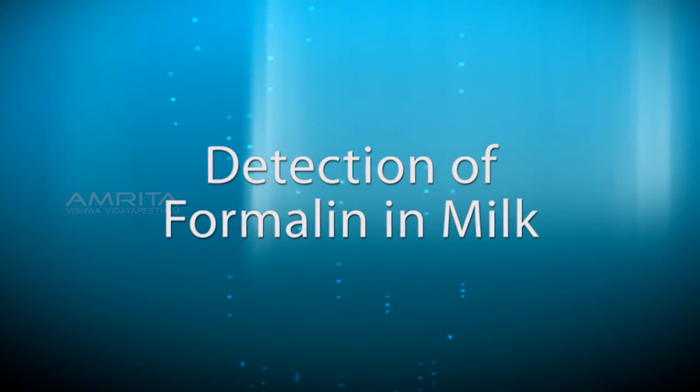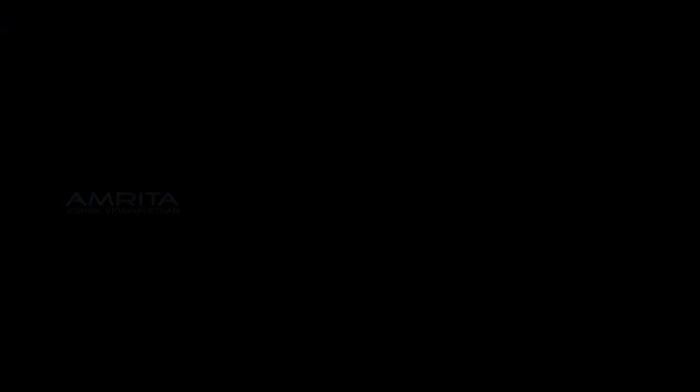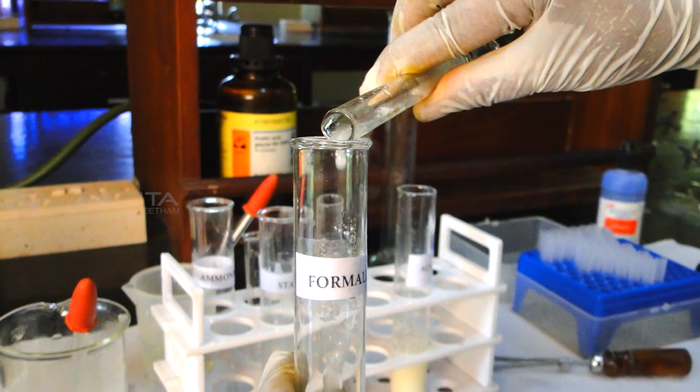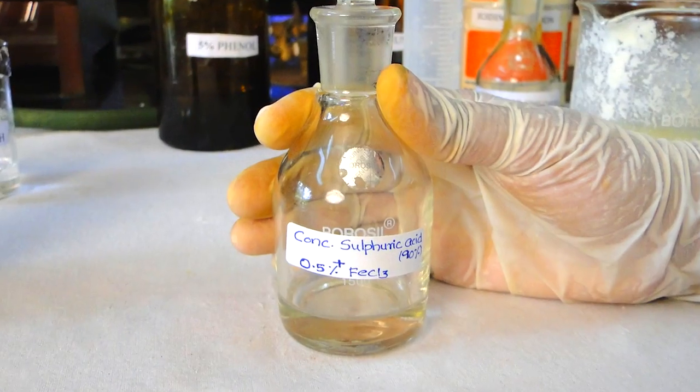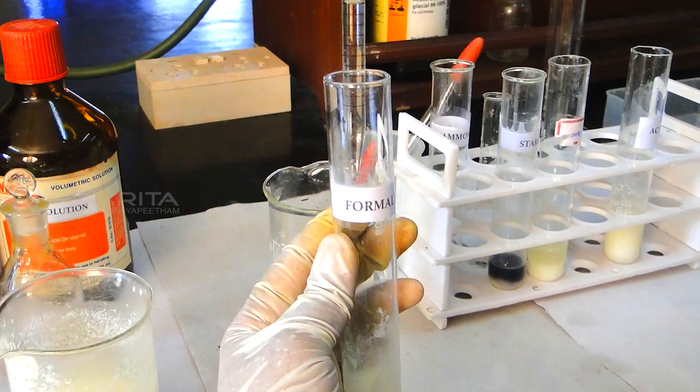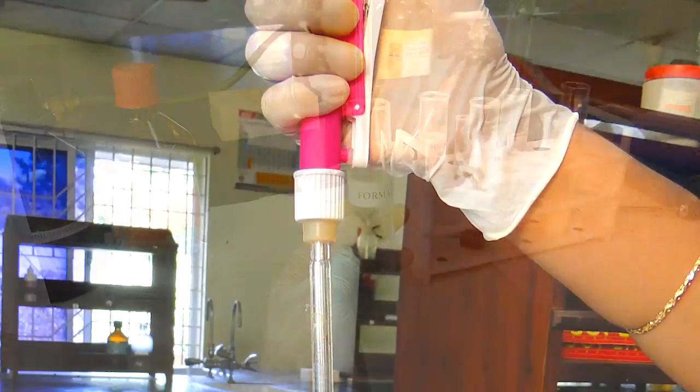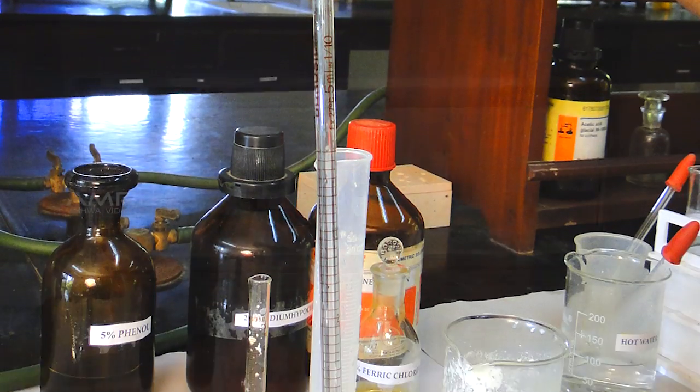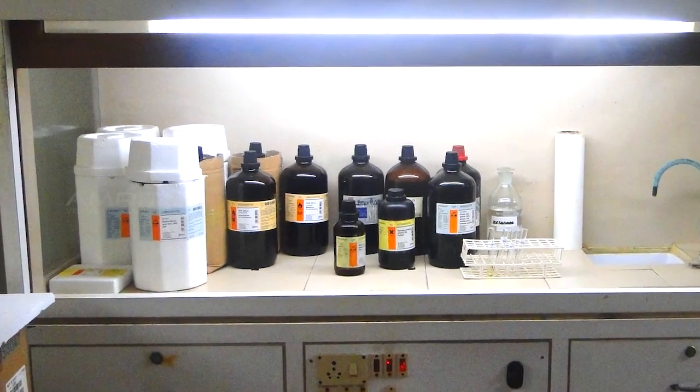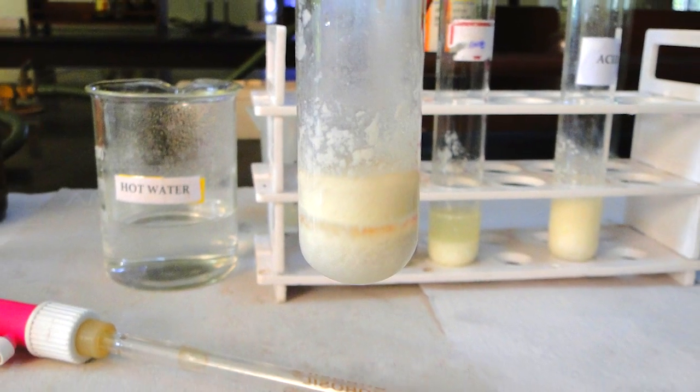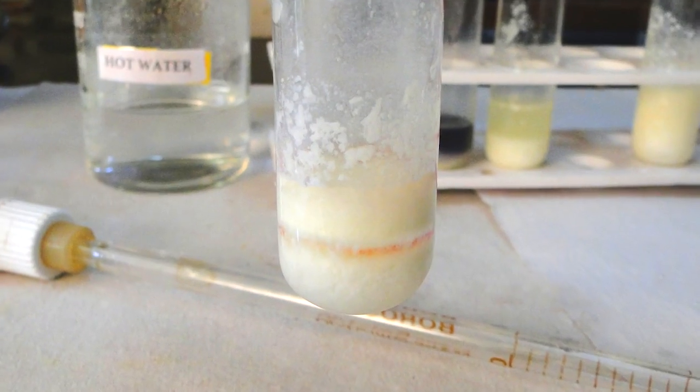Detection of formalin in milk. Pour 2 ml milk into test tube labeled formalin. To this, add 2 ml of 90% sulphuric acid containing ferric chloride using a glass pipette. This step should be done in the fume hood. A purple violet ring formed at the junction indicates the presence of formalin in the milk.